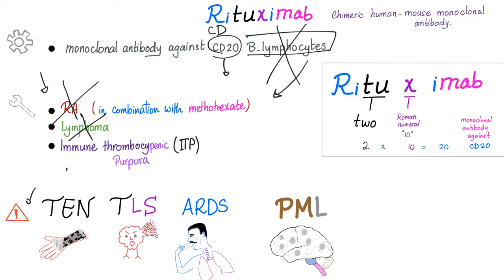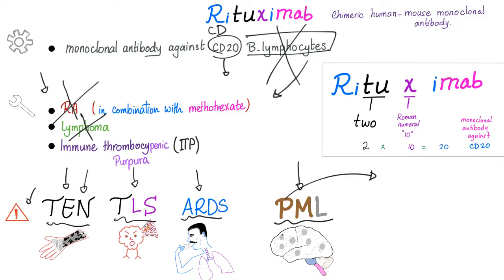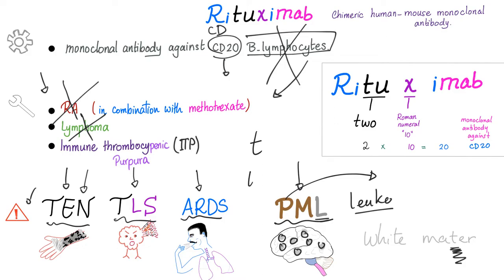Side effects of rituximab can be remembered with the mnemonic TEN-TLS-ARDS-PML: TEN is toxic epidermal necrolysis; TLS is tumor lysis syndrome; ARDS is acute respiratory distress syndrome; PML is progressive multifocal leukoencephalopathy. 'Progressive' because it worsens quickly, 'multifocal' because it affects multiple areas, and 'leukoencephalopathy' — 'leuco' means white, referring to the white matter in the brain. Note: it's spelled 'matter' with one T, from Latin 'mater' meaning mother.